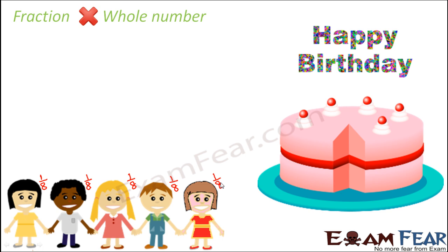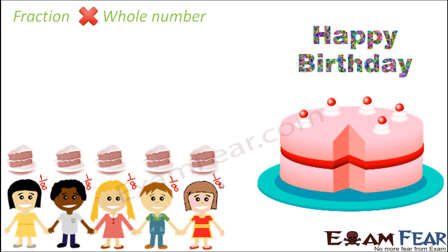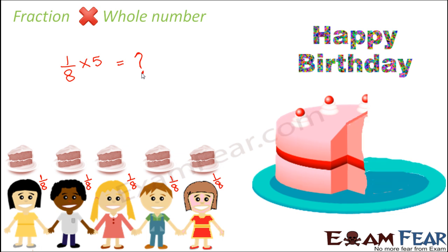We gave each one of them 1/8 of the cake. Now if I ask you what total fraction of the cake was eaten by your friends together — each one ate 1/8, and there were 5 of them — then 1/8 needs to be multiplied by 5. When you multiply it by 5, you get the part of the cake eaten by all 5 kids, because once they've eaten, a good part of the cake is already gone.